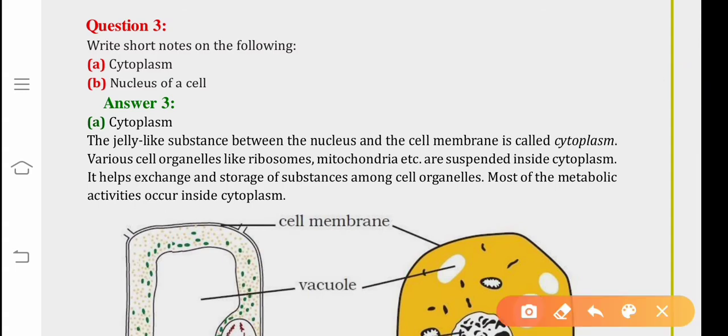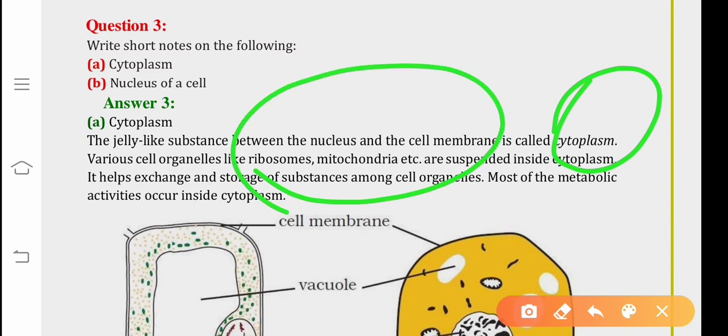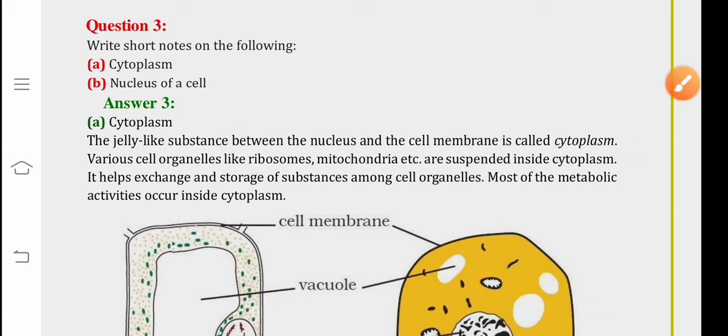So, cytoplasm is a jelly-like substance between the nucleus and cell membrane. Various cell organelles like ribosomes, mitochondria, etc. are suspended inside the cytoplasm. It helps exchange and storage of substances among cell organelles and most of the metabolic activities occur inside cytoplasm.